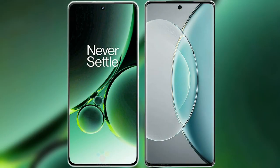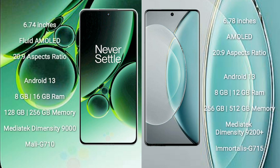I will compare the new OnePlus Nord 3 with Vivo X90s. OnePlus Nord 3 comes with a 6.74-inch flat AMOLED display. Vivo X90s comes with a 6.78-inch AMOLED display.